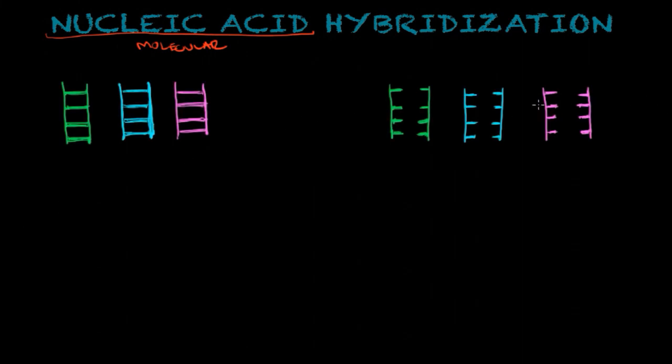You have a sequence or a mixture of a few nucleic acids, in this case DNA molecules, and you would like to detect a certain sequence. You want to find out where is this sequence in this mixture right here. Now what you do is nucleic acid hybridization.